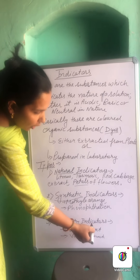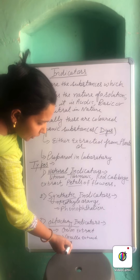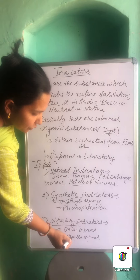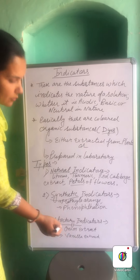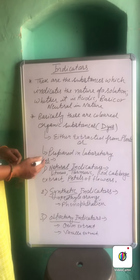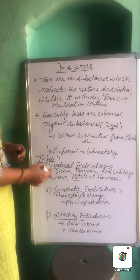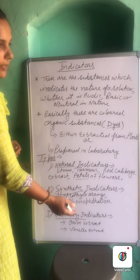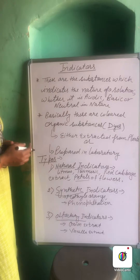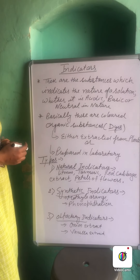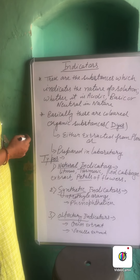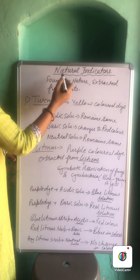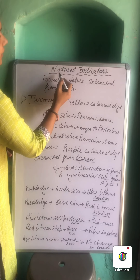Now the third type are the olfactory indicators. We add onion juice and vanilla extract with different types of substances, and we can predict whether these are acidic, basic, or neutral in nature.